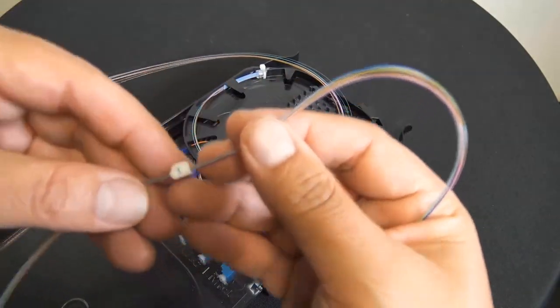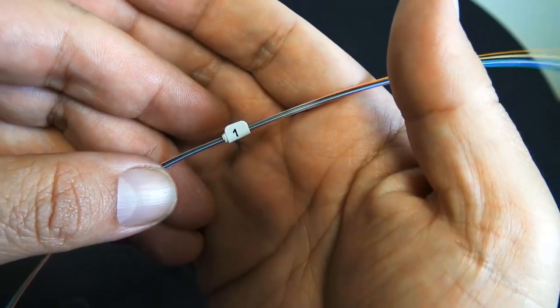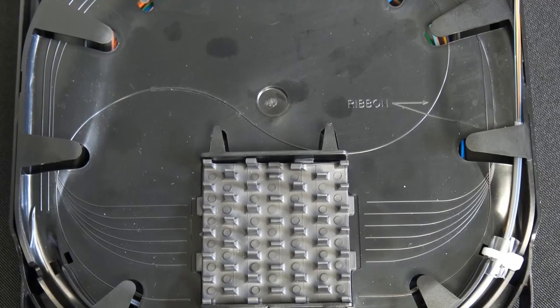Now if you had 24 strands, this one's only 12, it's numbered one, but obviously you'd have number two for the other.